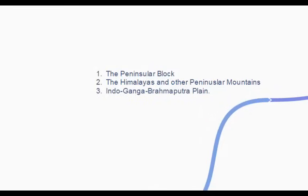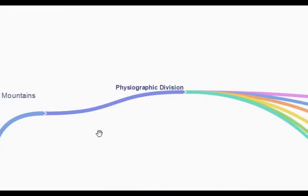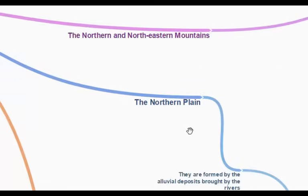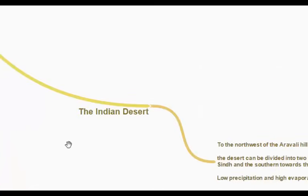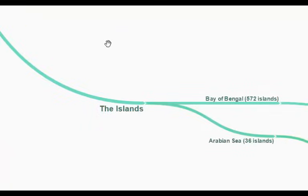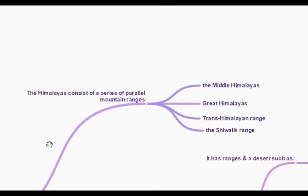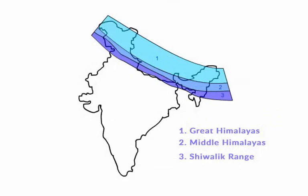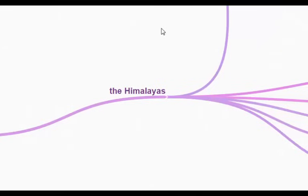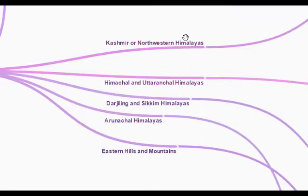Now that we've learned about the geological division, let's move on to physiographic division. In physiographic division, India is broadly divided into: the northern and northeastern mountains, the northern plain, the peninsular plateau, the Indian desert, the coastal plains, and finally the islands. Coming to the northern and northeastern mountains, we have the Himalayas, which consists of a series of parallel mountain ranges — the middle Himalayas, the great Himalayas, and the Shivalik range. The different types of Himalayas include the Kashmir or north-western Himalayas, Himachal and Uttaranchal Himalayas, Darjeeling and Sikkim Himalayas, Arunachal Himalayas, and the eastern hills and mountains.